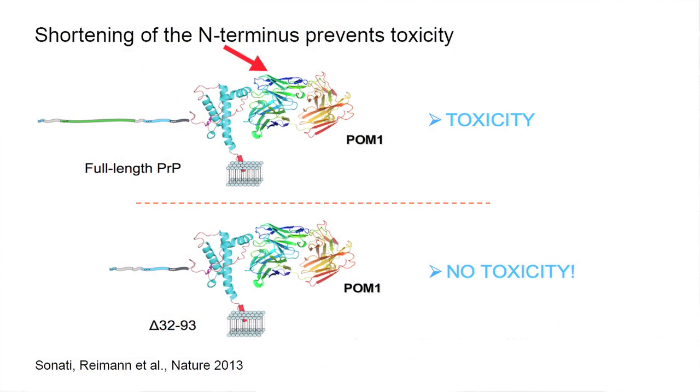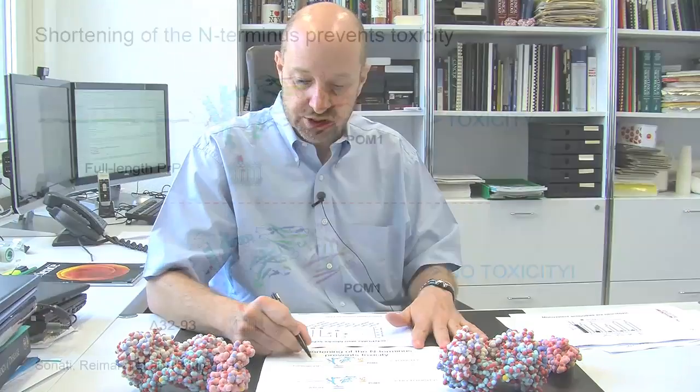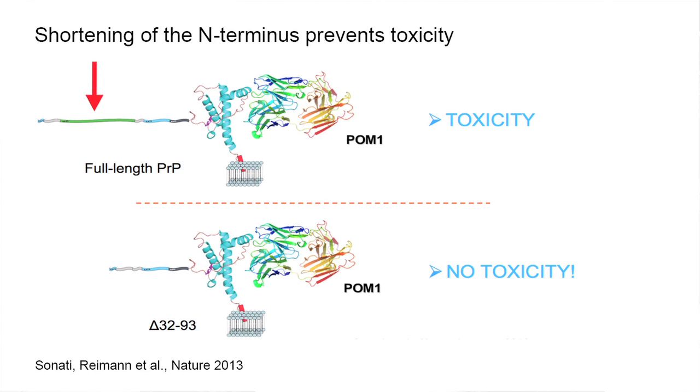This indicates that we are dealing with an allosteric effect. There is a binding site for the antibody, and there is an effector site — where binding induces a conformational, allosteric transition in the amino terminal — and the amino terminal is what drives the toxicity.